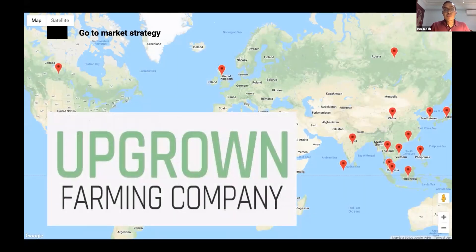As part of our go-to-market strategy, we have partnered with Upgrown Farming, a systems integrator and solutions provider. We are tapping on their network to have access to farms globally, including 70% of farms in Singapore and farms all over the world such as Canada, UK, and China.